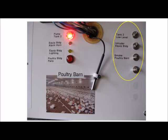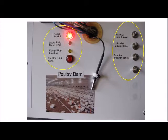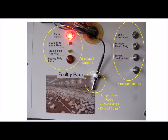The first switch is for a tank low level indication. The second is for an intruder in the equipment building. The third is for smoke in the poultry barn. The EasySwitch outputs drive lights designated as pump for tank two, equipment building alarm horn, equipment building lighting, and the poultry barn fans.